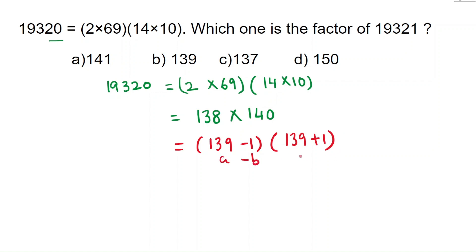a minus b and a plus b. It's nothing but a squared minus b squared, which is 139 squared minus 1 squared.